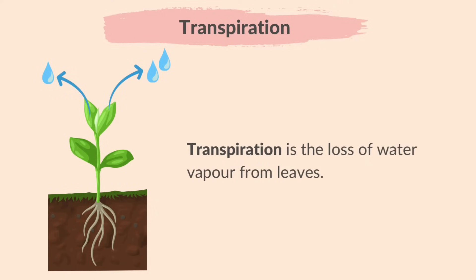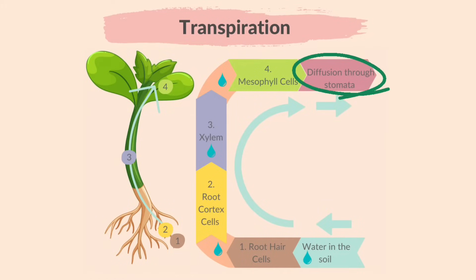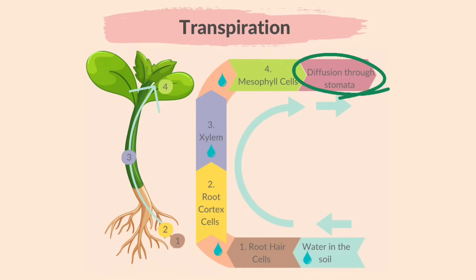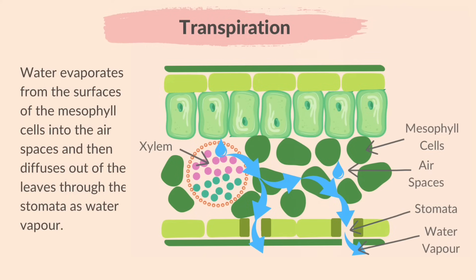Transpiration is the loss of water vapor from leaves. As water keeps leaving the leaves through transpiration, the water from the soil travels through the roots to the xylem and up to the leaves to replace the lost water. Water evaporates from the surfaces of the mesophyll cells into the air spaces and then diffuses out of the leaves through the stomata as water vapor.